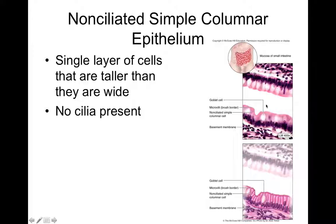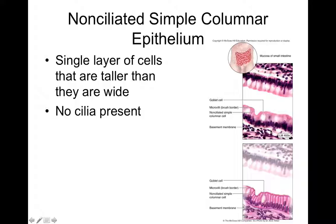Simple columnar epithelium is a single layer of column-shaped cells. You find simple columnar epithelium lining the digestive tract — the inside of the stomach, small intestine, and large intestine. Knowing it lines the digestive tract, its function is absorption of nutrients. It is not simple squamous because it needs to be more protective. Column-shaped cells provide more space for intercellular junctions, making it more protective than simple squamous or cuboidal.